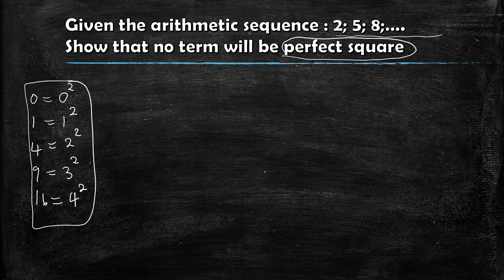So the question says: in this arithmetic sequence, show that no term will be a perfect square. How do we do this? We let our Tn be a perfect square and then calculate n. If no term will be a perfect square, when you calculate n you must get something that is not an element of the natural numbers. If there is a term that's a perfect square, then n must be an element of the natural numbers.